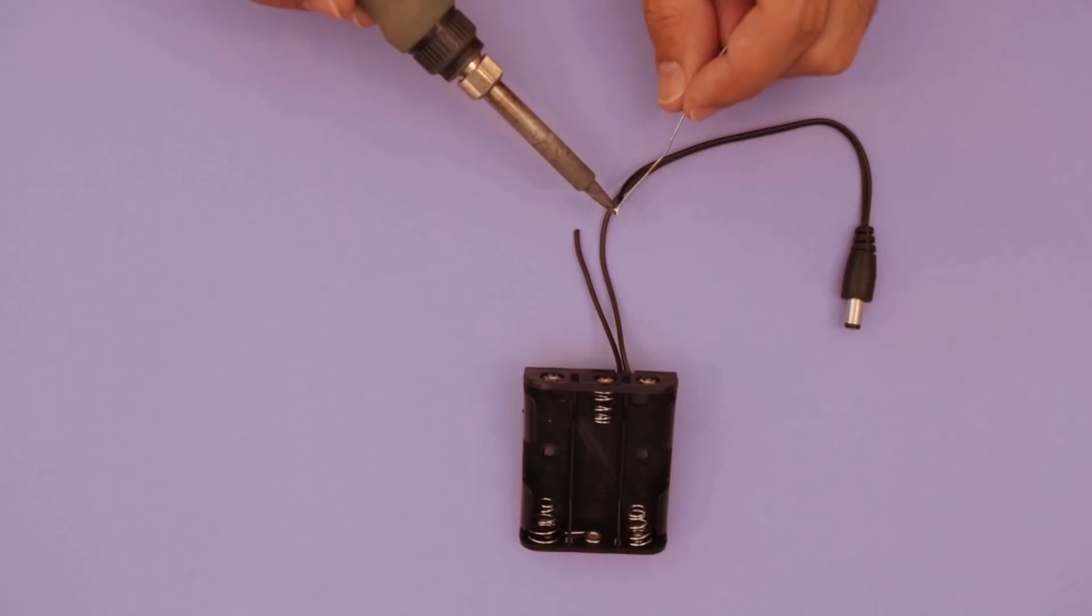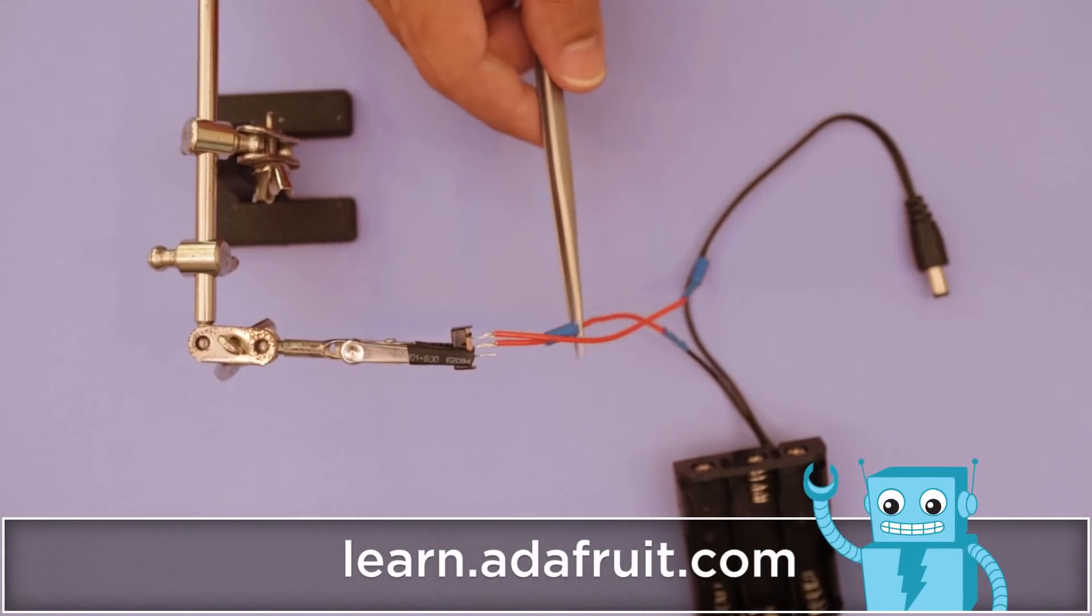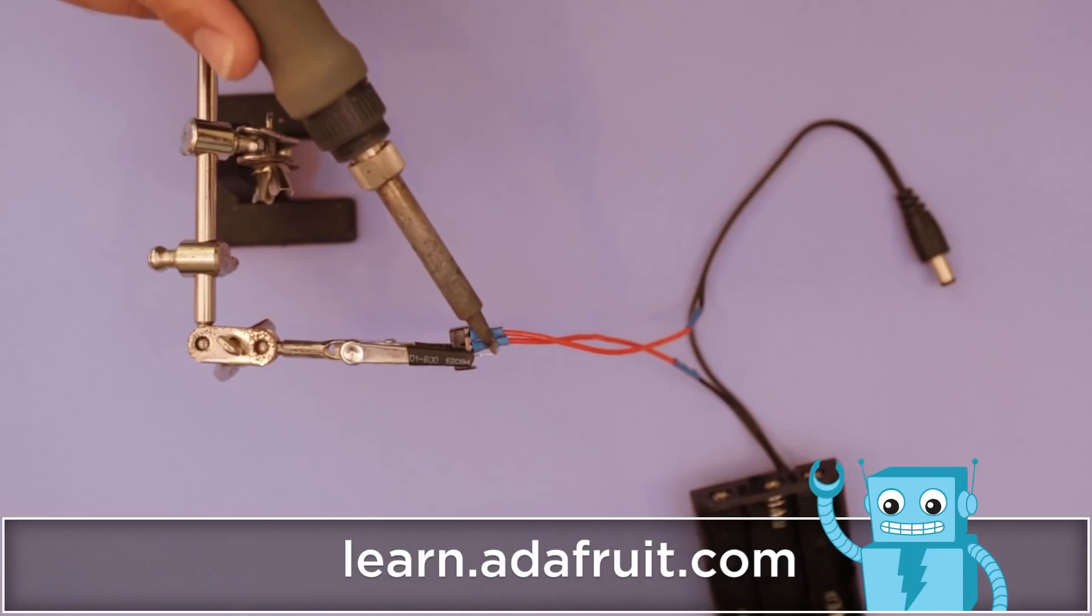For the electronics we took this battery holder and wired up a slide switch in line with the power. Check out our guide for a step-by-step tutorial and circuit diagram.